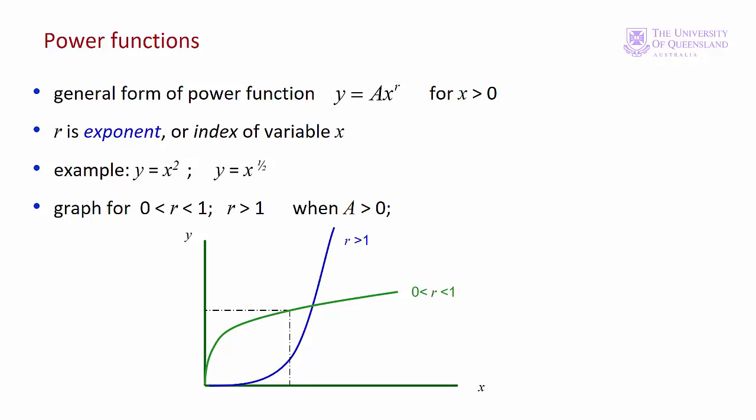Common examples: y equals x squared, y equals x to the half. We define the function for x greater than 0 since for many values of r, x to the r is not defined for negative values of x, and also 0 to the r is not defined for negative values of r.